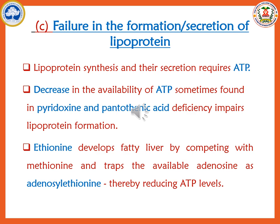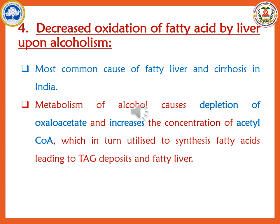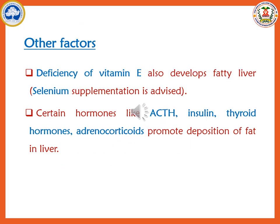Another important factor in reduced fat removal from the liver is alcoholism. The most common cause of fatty liver and cirrhosis in India is reported to be alcoholism. The metabolism of alcohol utilizes oxaloacetate, thereby depleting its availability for condensation with acetyl-CoA to enter the TCA cycle. The increased presence of acetyl-CoA is then diverted into fatty acid synthesis, leading to increased triacylglycerol production, which in turn leads to fatty liver. Apart from this, deficiency of vitamin E and hormones such as ACTH, insulin, thyroid hormone, and adrenocorticoids can also stimulate fatty acid production and accumulation as triacylglycerol, leading to fatty liver.